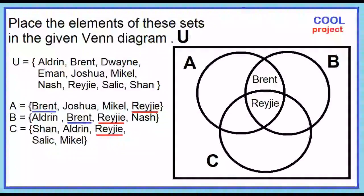What are the elements common to A and C? Michael and Reggie. Since we already have Reggie, place Aldrin in the area where B and C overlap.